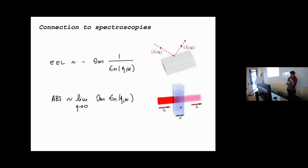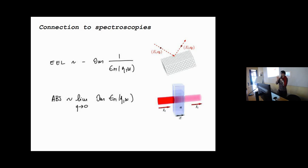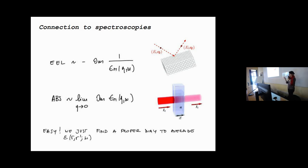Next we try to relate these quantities to experiments and introduce rough approximations to compute them in the simplest way. The connection with spectroscopy is straightforward: for simulating electron energy loss spectra describing inelastic scattering of electrons on a sample, or for describing an absorption experiment, the quantity we need is the macroscopic dielectric function. So we need to find a way to compute this macroscopic epsilon_M.